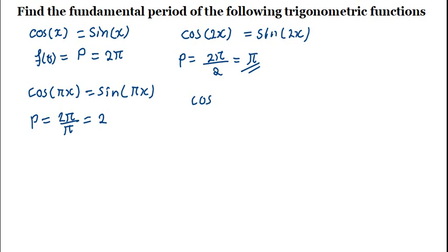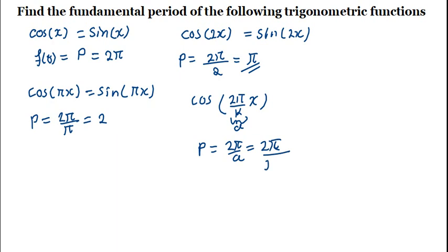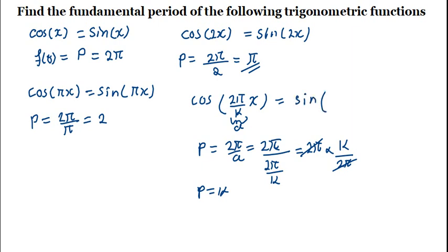Let's say we have something like cos 2pi over k times x. This is one and the same thing. As I said, that coefficient is more like an a, so you can say the period is equals to 2 pi divided by a. This is more like 2 pi divided by 2 pi over k. That can be written as 2 pi multiplied by k divided by 2 pi. You can cancel those out, so you find that the period is equals to k. The same applies if you are given sine 2 pi over n times x.